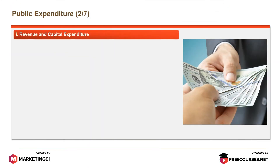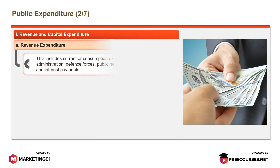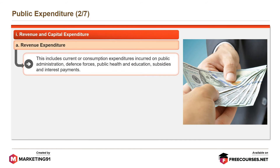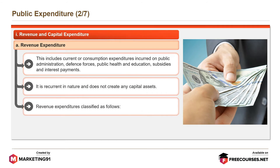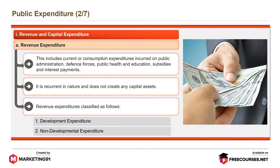Revenue expenditure includes current or consumption expenditures incurred on public administration, defense forces, public health and education, subsidies, and interest payments. It is recurrent in nature and does not create any capital assets. Revenue expenditure is classified as development expenditure and non-developmental expenditure.